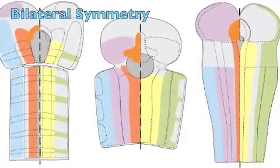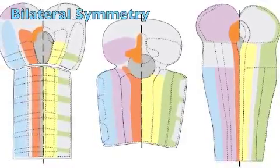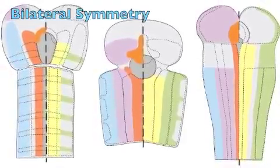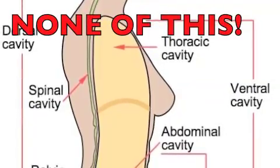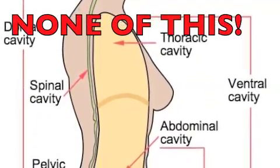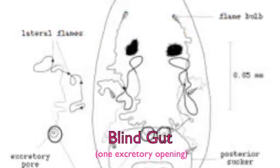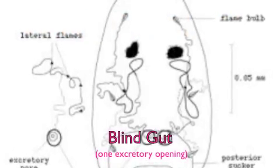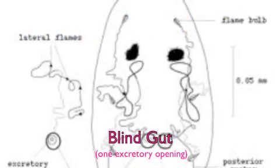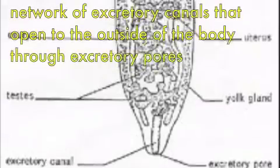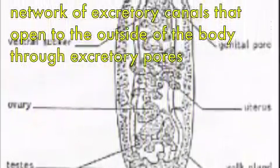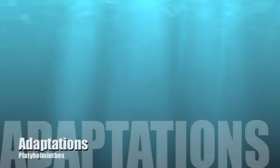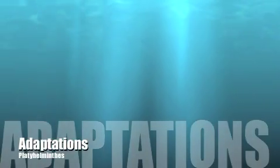They are bilaterally symmetrical. The body contains no internal cavity. They possess a blind gut and have protonephridial excretory systems instead of an anus.